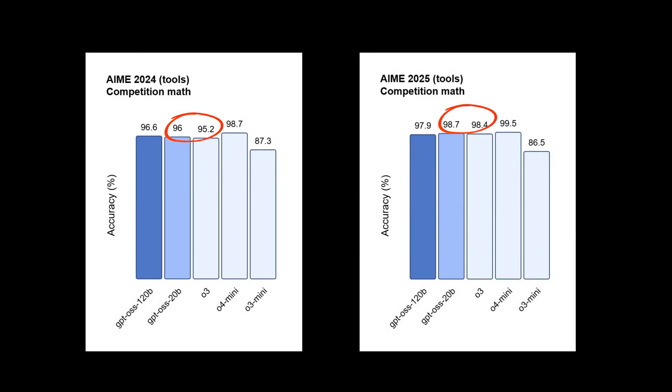The smaller 20B model is delivering similar results to O3 on common benchmarks, and it can run on edge devices with just 16GB of memory.